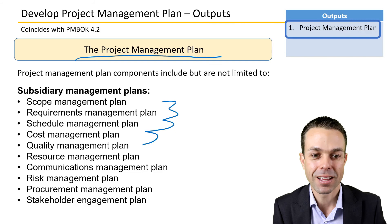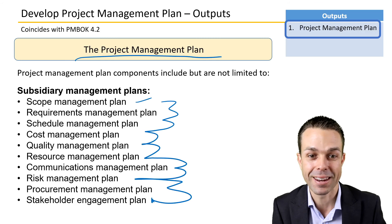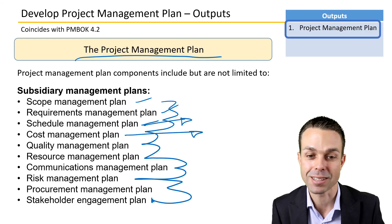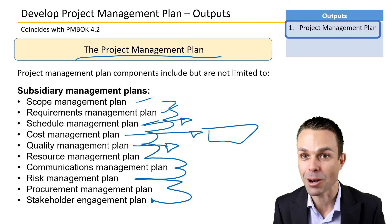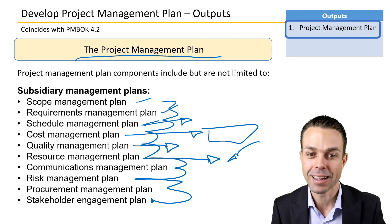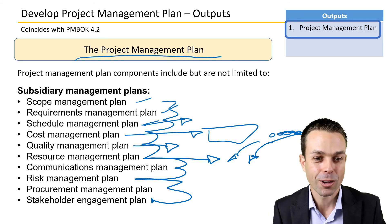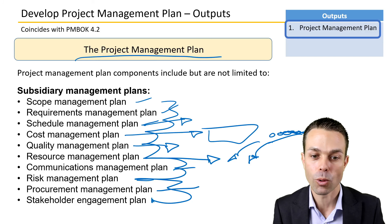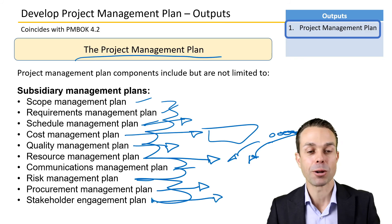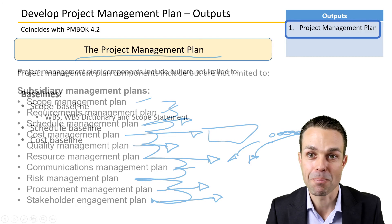The output of this process is the project management plan itself, which contains all the other plans we'll be creating. These include the scope management plan, requirements management plan, schedule management plan, cost management plan, quality and testing approach, resource management, communications management, risk management, procurement management, and the stakeholder management plan. All of these subsidiary plans go into the project management plan.